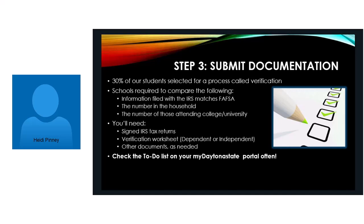A lot of times they'll ask for the number of family members attending colleges and universities. The way that we determine this is we ask for different things such as a verification worksheet — dependent or independent — that pops up on your My Daytona State portal. We also ask for your IRS tax returns — that 2017 or 2018 IRS tax return that does need to be signed — and because the federal government changed the tax forms in 2018, all of those fund schedules: Schedule 1, Schedule 2.